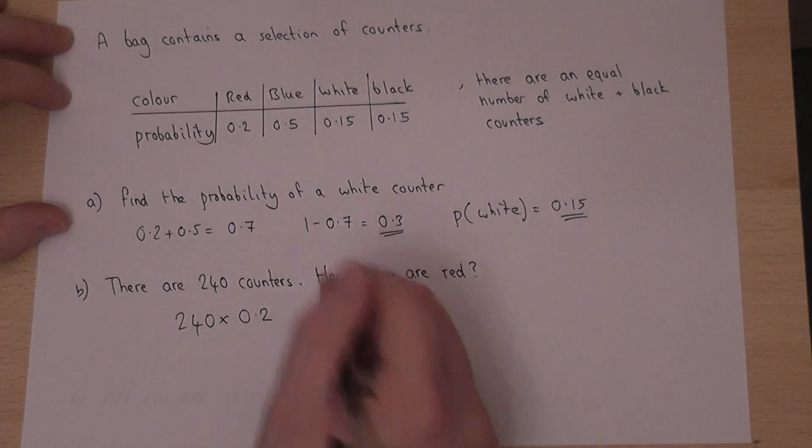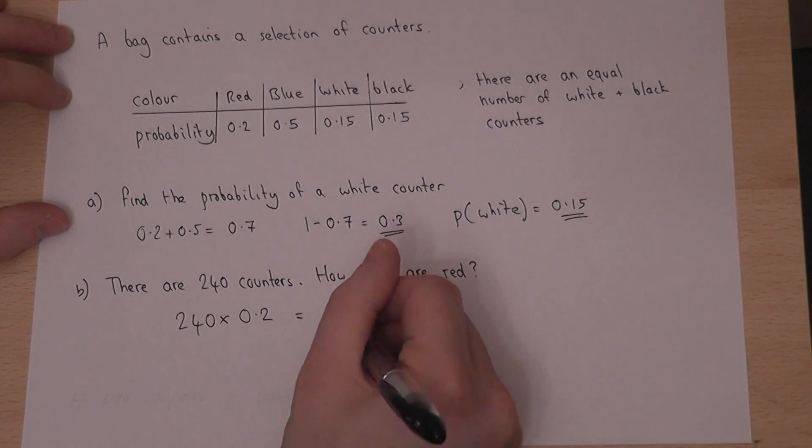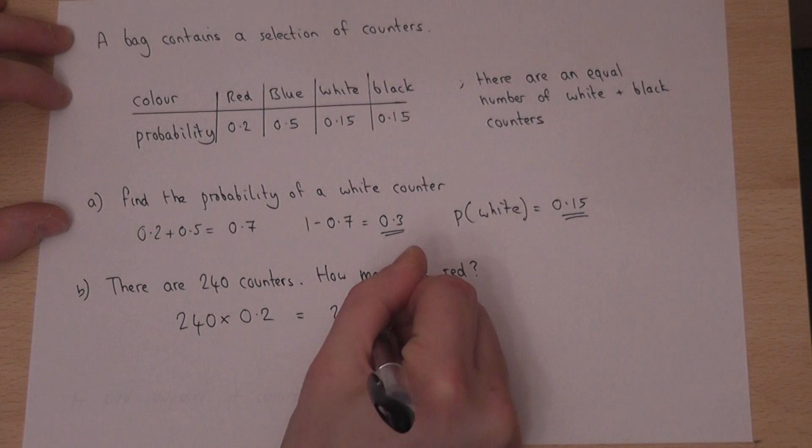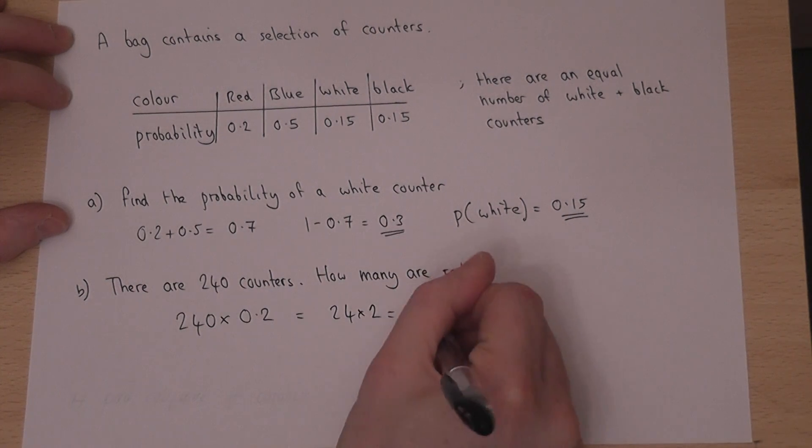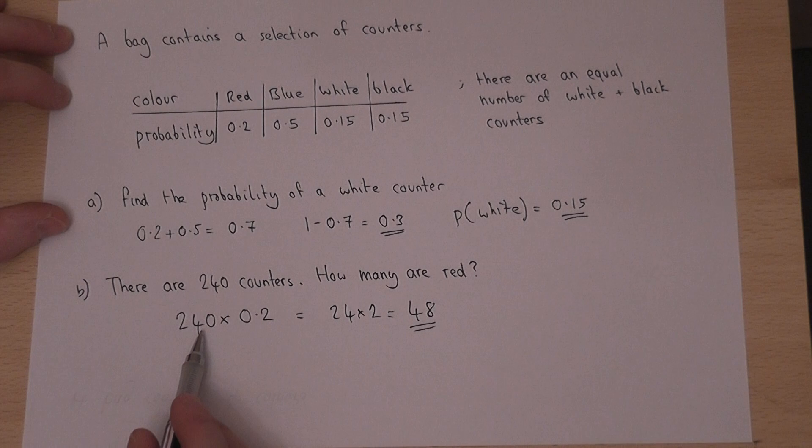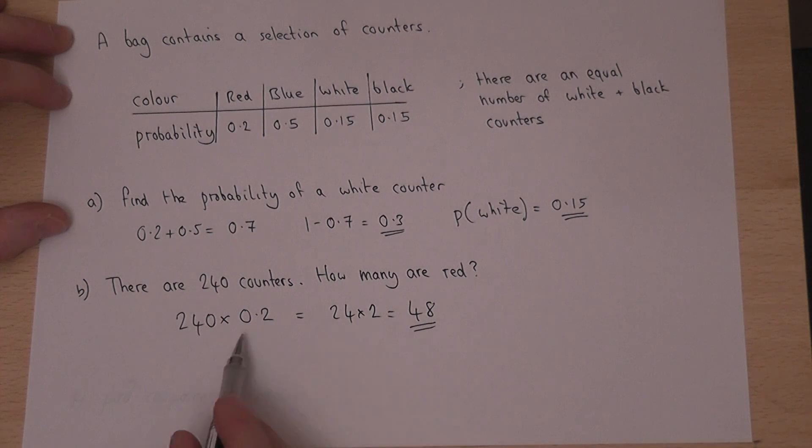240 times 0.2 is 24 times 2, which is 48. Another way: 0.1 times 240 is 24, so 0.2 times 240 is twice 24, which is 48.